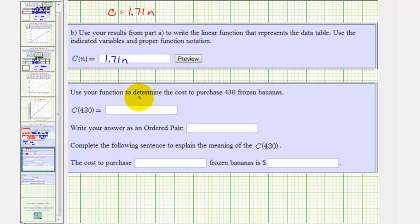Next, we're asked to use the function to determine the cost to purchase 430 bananas, which means they're telling us n is equal to 430. So to determine this function value, we want to find c of 430, which would be 1.71 times 430, which comes out to 735.3.